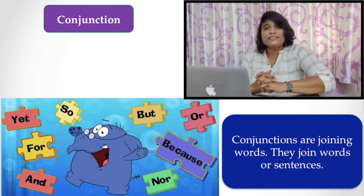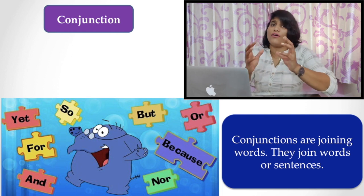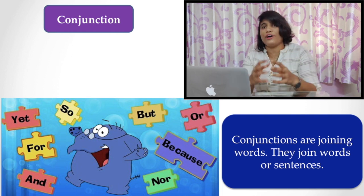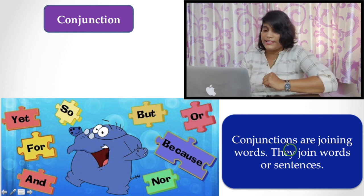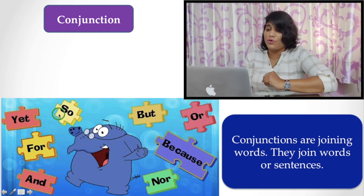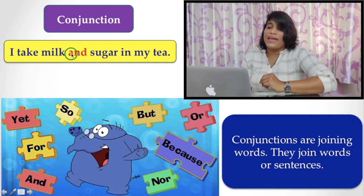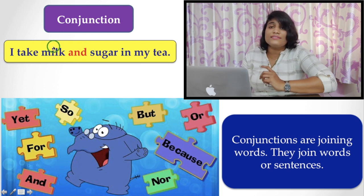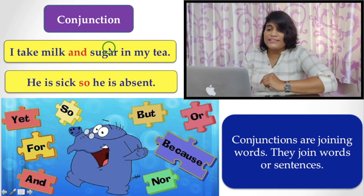Conjunction. Conjunctions are the joining words. Sometimes we have to say lots of things or words. They are connected or joined together in a sentence. So they join words or sentences. What are they? Yet, so, but, or, for, and, nor. Because, let's see the example. I take milk and sugar in my tea. Here, 'and' joins the words milk and sugar together.